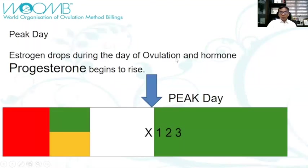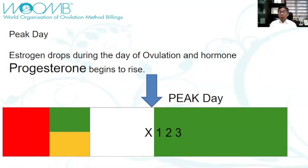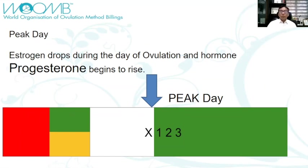When the peak day arrives — the day of ovulation — the estrogen will drop. There will be a sudden drop of estrogen during the day of ovulation, and this usually happens on the peak day. With the drop of estrogen, a new hormone will commence. During the peak day, the day of ovulation, progesterone will now rise. We call this PC — progesterone change. So progesterone begins to rise at the peak day or the day of ovulation.